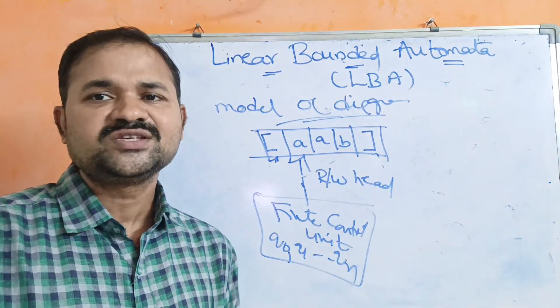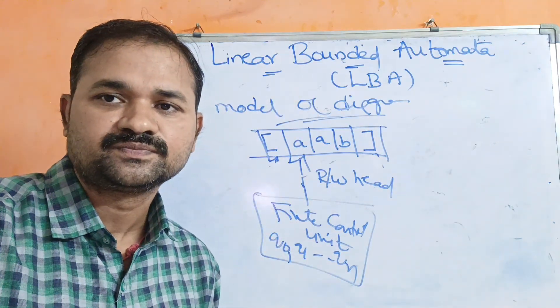Now let us see the diagram for the linear bounded automata model. It contains three main components. The first is the input tape — for example, the string 'aab'. The tape is divided into cells, each containing one symbol. Before the input string we have the left end marker ML, represented by a left square bracket or dollar symbol, and after it we have the right end marker, represented by a right square bracket.